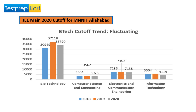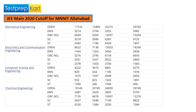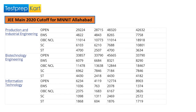The cutoff data is organized by course name, category, and gender — male and female — as well as home state versus other state. There is a difference between home state and other state candidates: home state candidates have slightly higher cutoff marks, while other state candidates have slightly lower cutoff marks. This chart and list is available on-screen for reference.